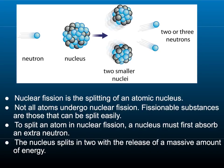First we're going to talk about nuclear fission. Nuclear fission is the splitting of an atomic nucleus. Not all atoms can undergo nuclear fission. Fissionable substances are those that can be split easily. To split an atom in nuclear fission, a nucleus must first absorb an extra neutron. The nucleus then splits into two smaller nuclei and releases more neutrons — either two or three — and a massive amount of energy.